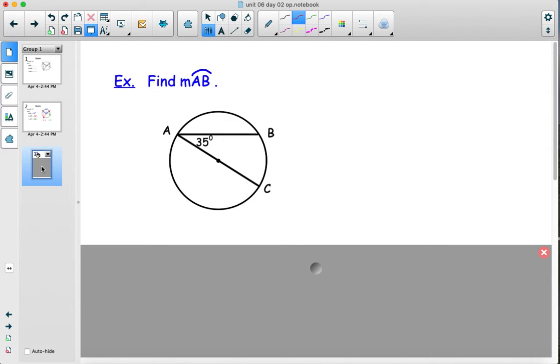All right, a few other examples before you start practicing some more of the inscribed and central angles. So in this example, I'd like you to find the measure of arc AB. Now, arc AB is here. And that's a little different from some of the ones we've done before, because right now we know angle BAC is 35 degrees. And by the way, a special note, I want you to note that segment AC is the diameter, because it goes through the center of the circle.